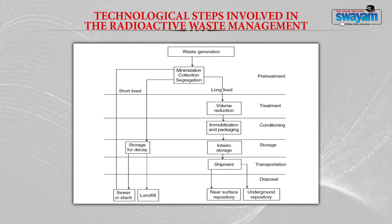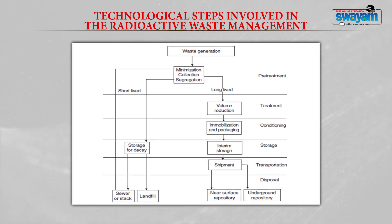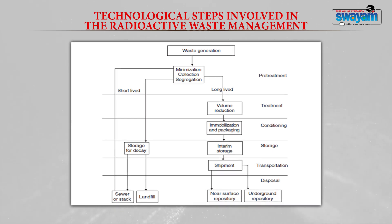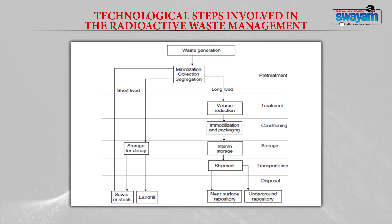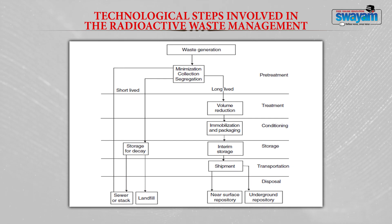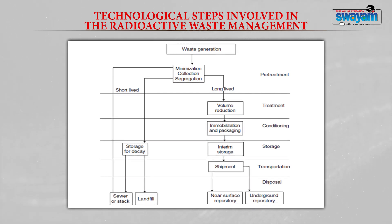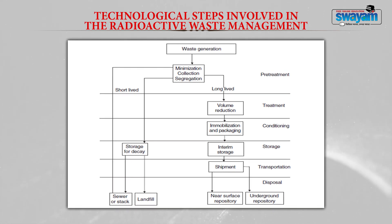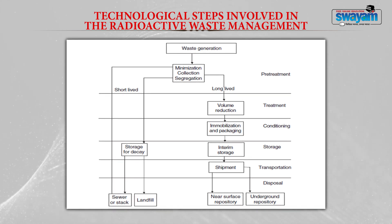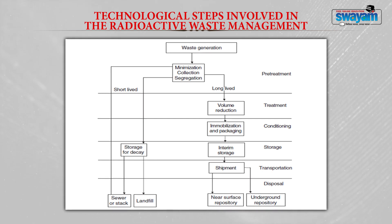Short-lived radioactive waste is usually stored for decay and may then be disposed in sewers or landfills. Long-lived radioactive waste separated during pre-treatment undergoes treatment, primarily for volume reduction. The next step is conditioning, where immobilization and packaging take place — a very important step, as unimmobilized radioactive waste may leak into the environment, entering food chains and water bodies.